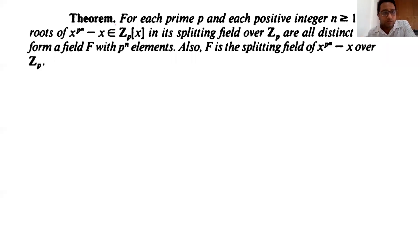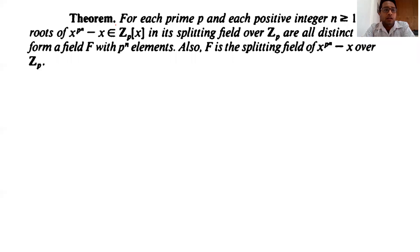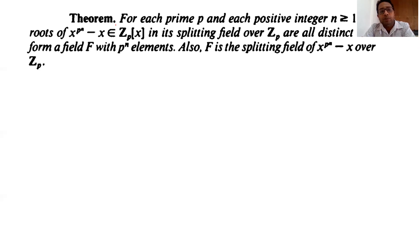The next theorem is a converse of the theorem discussed in the previous lecture. For each prime p and each positive integer n, the roots of x^(p^n) minus x belonging to Z_p — meaning Z by p, the equivalence classes in the collection — in its splitting field over Z_p are all distinct. The first thing we have to prove is that the polynomial x^(p^n) minus x has all its roots distinct, and the second thing is that the collection forms a field with p^n elements.